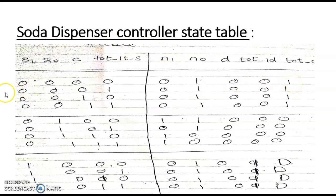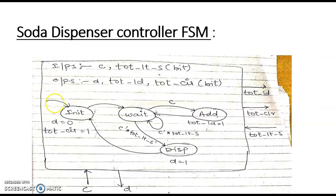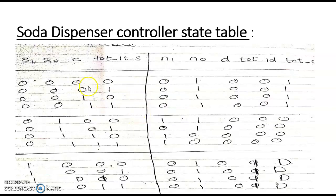When it is in the 00 state — the initial state — there is no effect of the C signal, and even TOT_LTS has no effect. That means irrespective of TOT_LTS and C, it will come into the wait state. So, 00 state irrespective of inputs comes into the 01 state. D is 0, TOT_LD is 0, and TOT_clear is 1, meaning it is clearing the TOT register when entering the wait state.